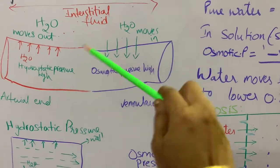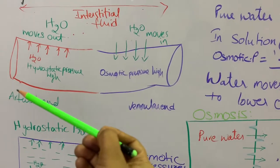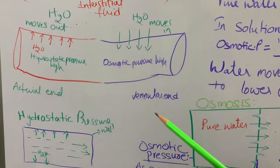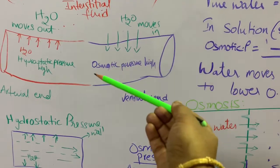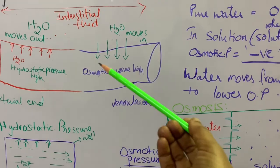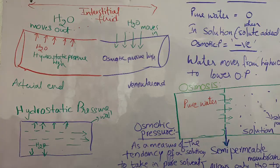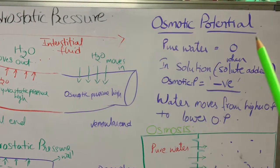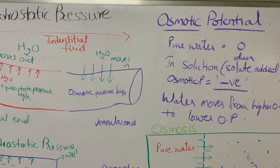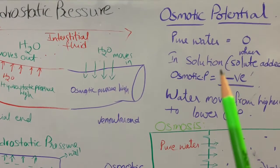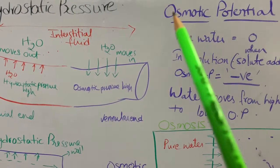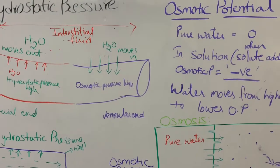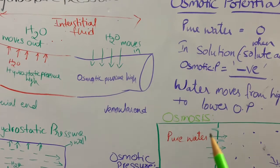At the venular level, the hydrostatic pressure is very low. That's why the water cannot move outside from the veins into the interstitial fluid. So to remember: at the arterial end, hydrostatic pressure is high; at the venular end, hydrostatic pressure is less. At the venular level, the osmotic pressure is high. Let's come to know what is meant by osmotic pressure, but before that, let us know about osmotic potential. The process of movement of water molecules is known as osmosis.